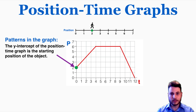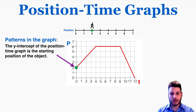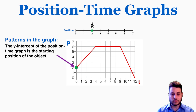We can now begin to pick up on patterns in these graphs. The first one you might have noticed is that the y-intercept of a position time graph is the starting position of the object. This is always true because by definition the y-intercept is what the y value is when the x value is 0, so this is asking what the position is when the time is 0, which is the starting position of the object.